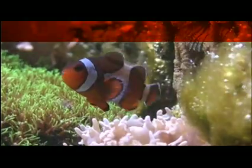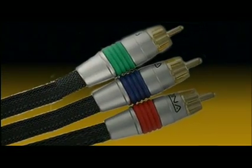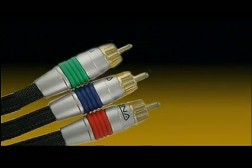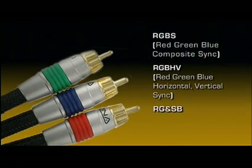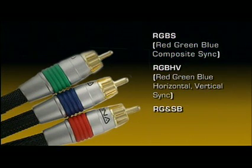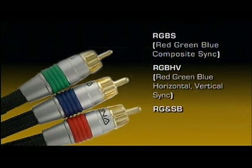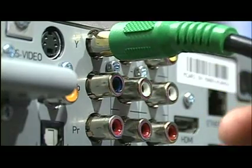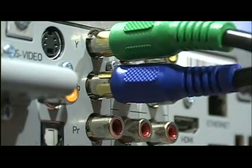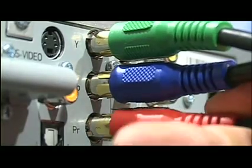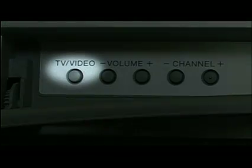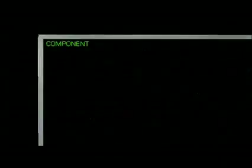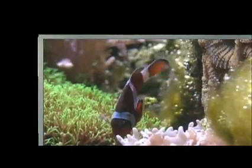Component means that the video signal is broken into parts, and those parts are carried by three separate cables. Video is broken into three major colors — red, green, and blue — but each wire doesn't carry a separate color signal. In fact, one cable carries an RGB-S signal, the other RGB-HV, and RG-SB. As you did with the previous cables, hook the red, green, and blue connectors to the out of your cable box and to the in on your TV. Make sure you match the colors. You will have to use the TV video or input button on your remote to change the input selection on your TV to the component signal.